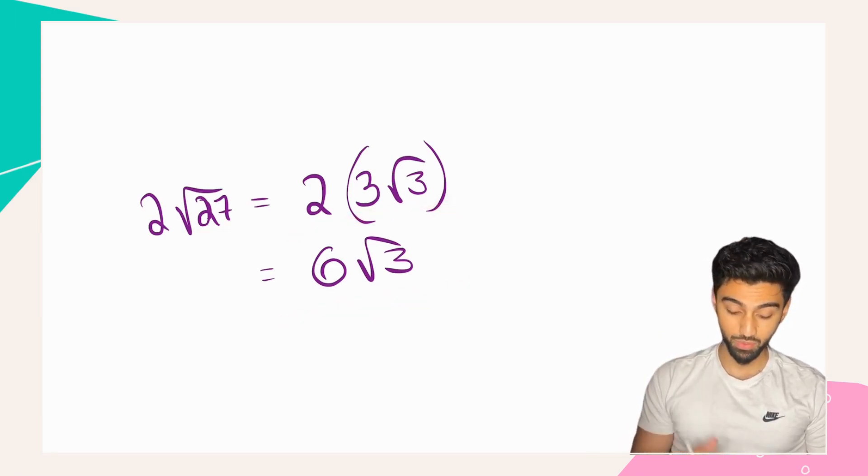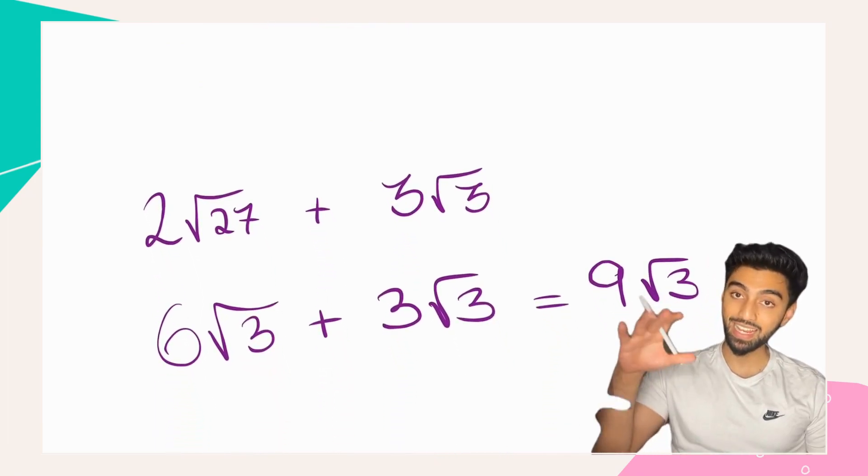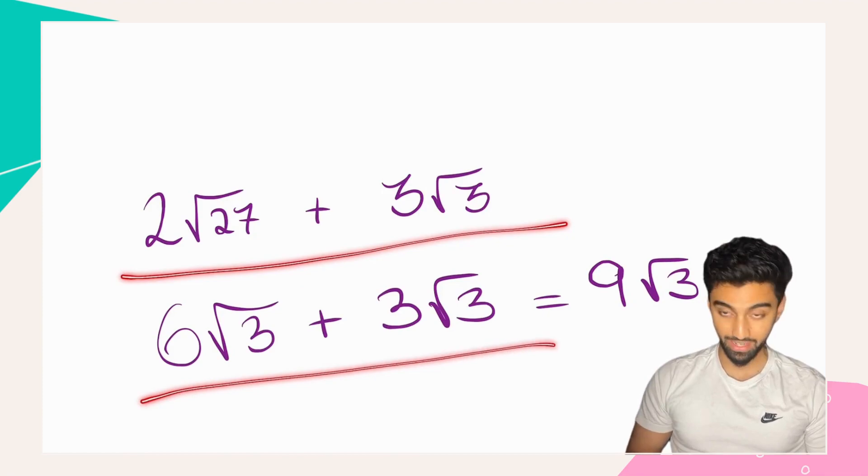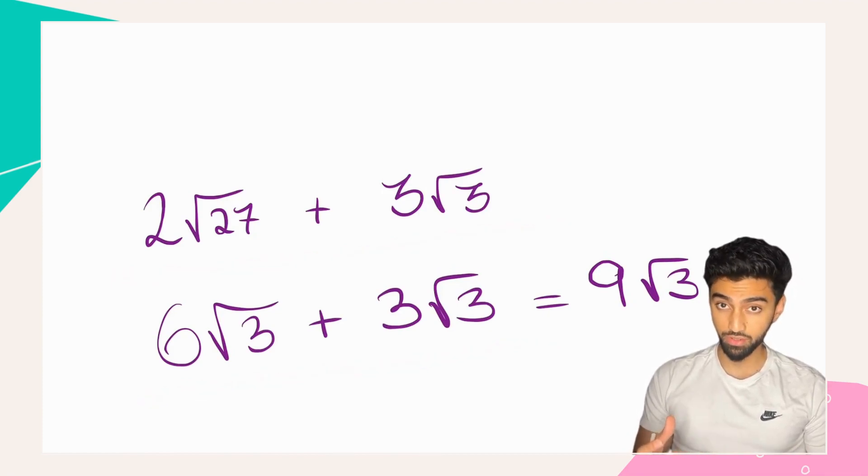Now, we've simplified 2√27 using that method, and so we can substitute it back into the original equation. 2√27 plus 3√3 can be rewritten as 6√3 plus 3√3, and the answer here is 9√3.